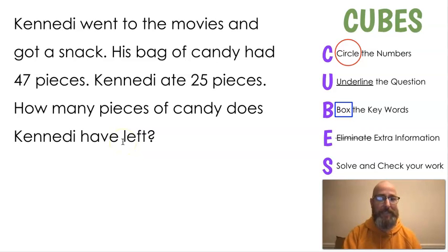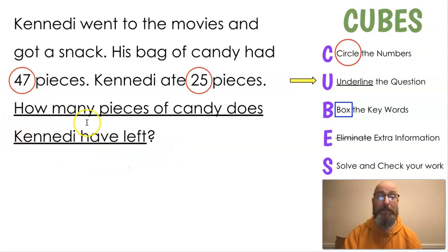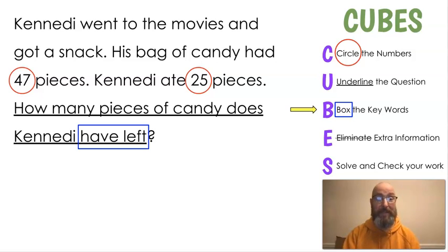What's our first step? What's the C stand for? Circle the numbers. There's two numbers in this question. Do you see them? 47 and 25. Our next step is U. And U stands for? Underline the question. And of course, we're going to look for the question mark. That's right. And so, our question is, how many pieces of candy does Kennedy have left? Our next thing is to find the key words. Now, we're brand new at this. You may not know the key words, but does anybody think they know? Hopefully, you said have left. That's our key words. Those words mean that somebody subtracted. So, we're going to have to subtract to solve the question.